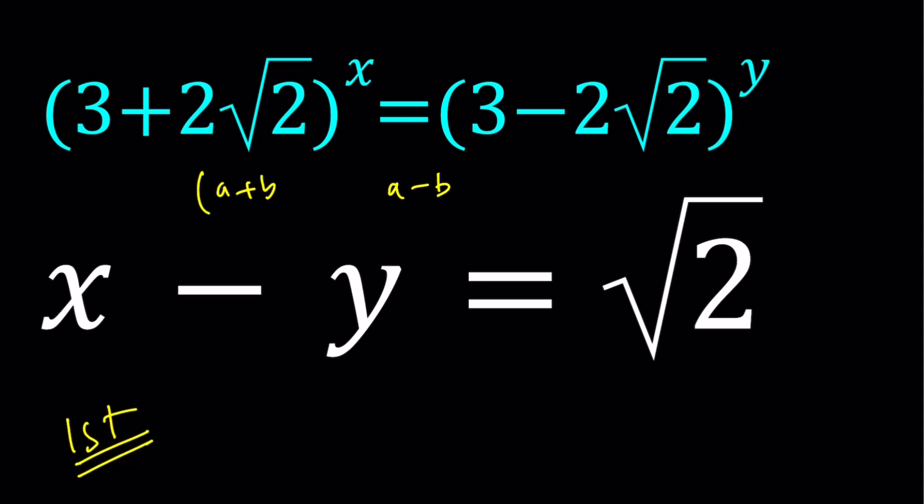So when we multiply these two things, they should give us difference of two squares. So these two things are, for that reason, called conjugates.